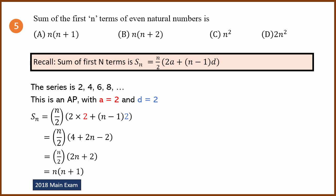Let's look at the fifth question. This is a sum of n terms question. Sum of the first n even natural numbers. The series is 2, 4, 6, 8. This is an AP with first term 2 and common difference 2.